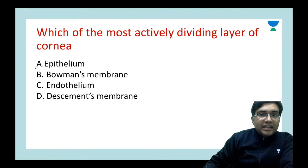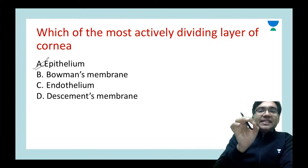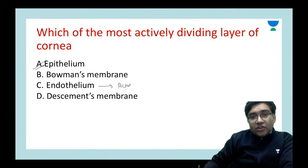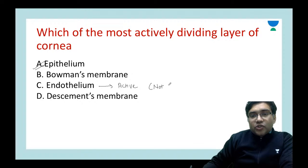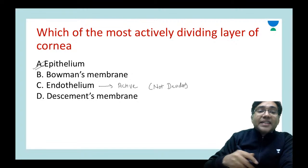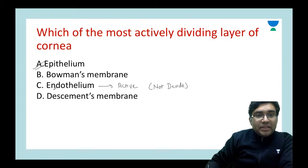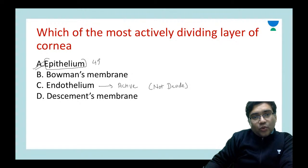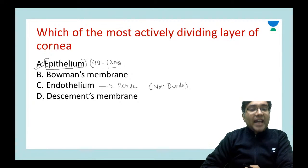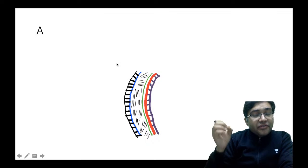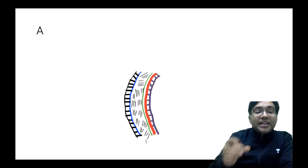The answer is A — epithelium. Some students confuse it with C. Remember, endothelium is the most active layer of the cornea, but endothelium does not divide. That is why it is a more vital layer — once damaged, it cannot regrow. In contrast, the epithelium can regenerate within 48 to 72 hours, which is called the corneal epithelium turnover time. Two layers which do not regenerate are Bowman's membrane and the endothelium; the layer that can regenerate is your epithelium.